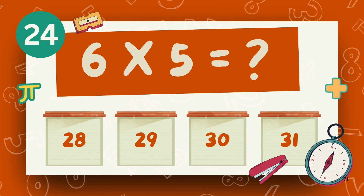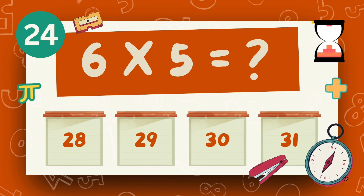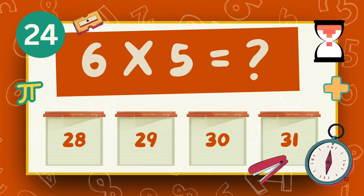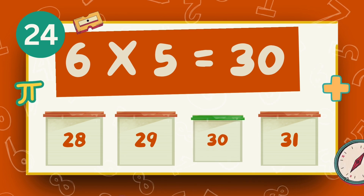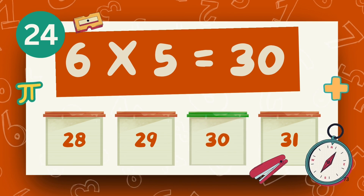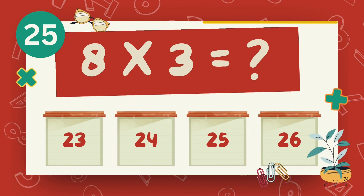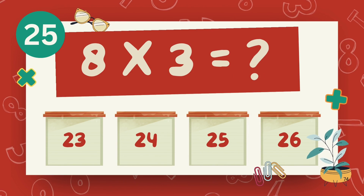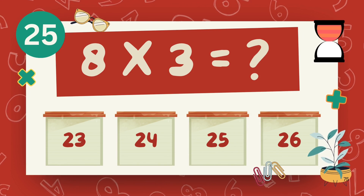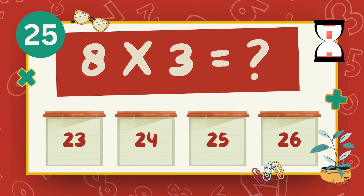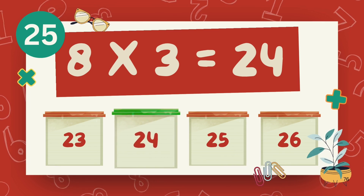What is 6 multiply 5? The answer is 30. What is 8 multiply 3? The answer is 24.